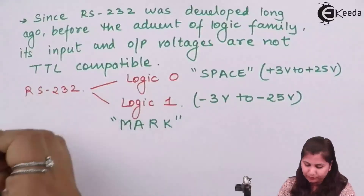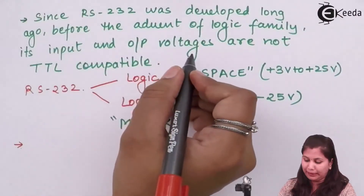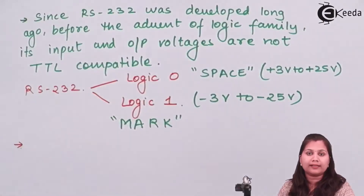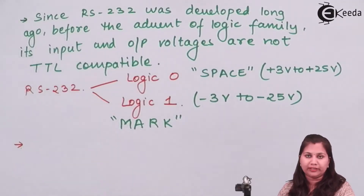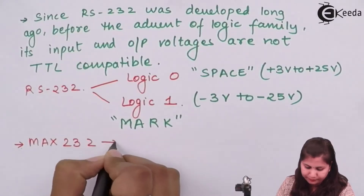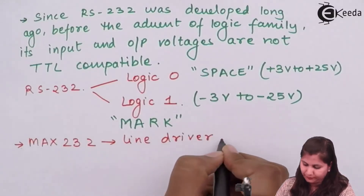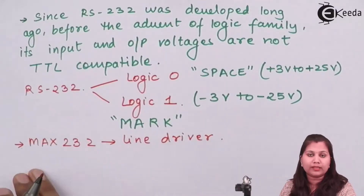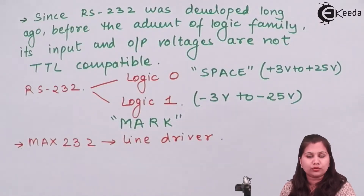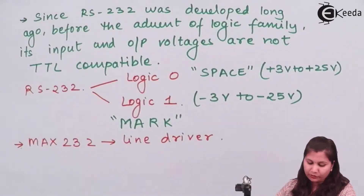Because the RS-232 input and output voltages are not TTL compatible, we have to convert the signals into TTL signals so that we can connect the microcontroller with it. For this we use a line driver MAX232, and this line driver converts the TTL signals to RS-232 compatible signals and RS-232 signals back to TTL signals.